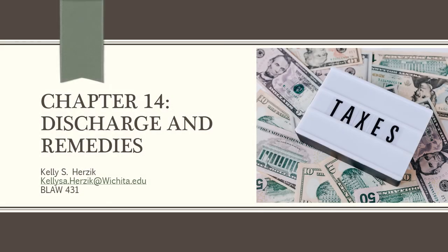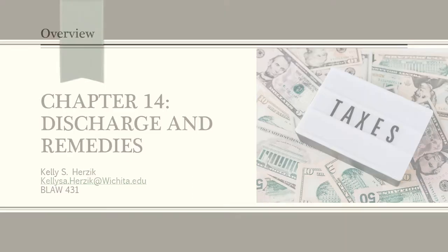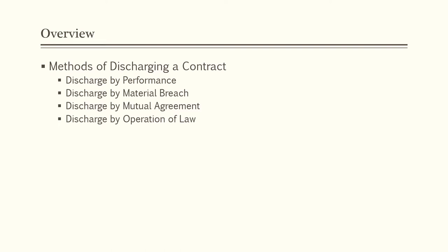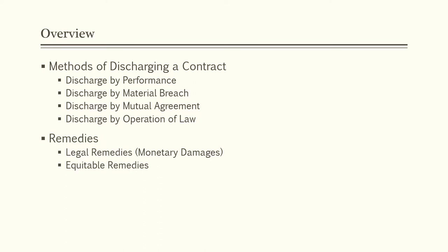Chapter 14: Discharge and Remedies, presented by Kelly Herzig. In this chapter we're going to discuss methods of discharging or ending a contract. There are four types: discharge by performance, discharge by material breach, discharge by mutual agreement, or discharge by operation of law. We'll also discuss remedies. There are two types: legal remedies, which are monetary damages, and equitable remedies.